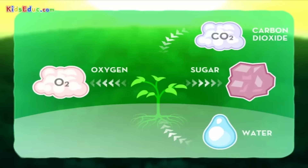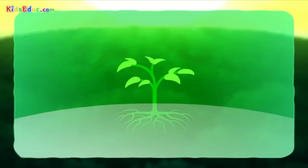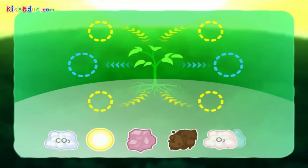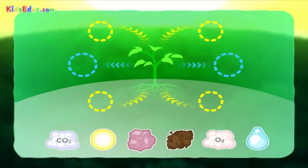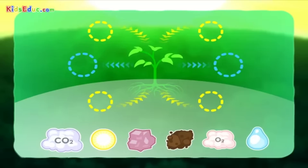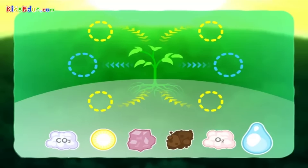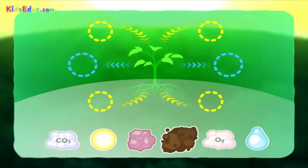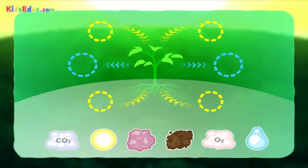Let's take a look at what it takes to perform photosynthesis. Remember, a plant needs four elements to assemble sugars: sunlight, carbon dioxide, water, and nutrients.